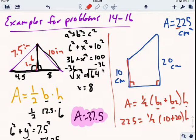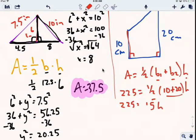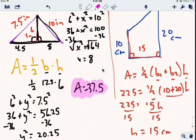Simplifying first: 10 plus 20 is 30, half of 30 is 15, so we have 225 equals 15 times height. Dividing both sides by 15, the height equals 15 centimeters. Good luck.